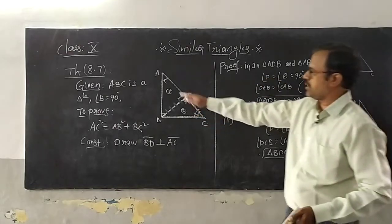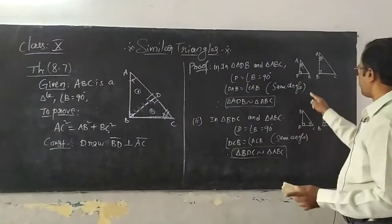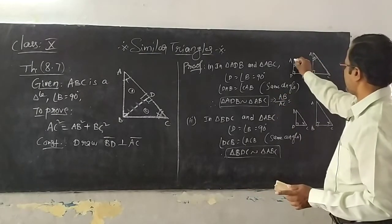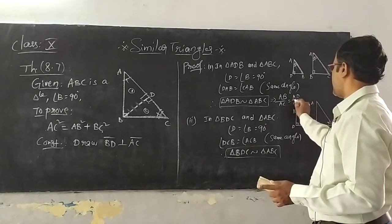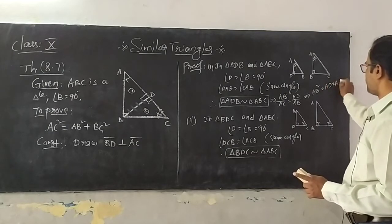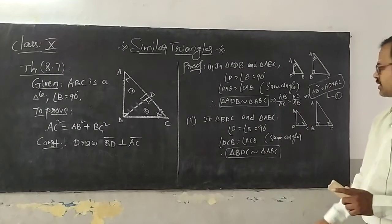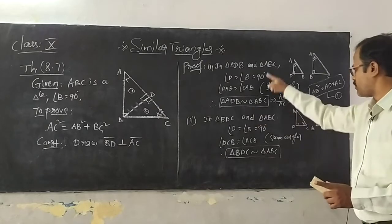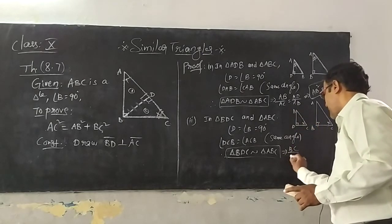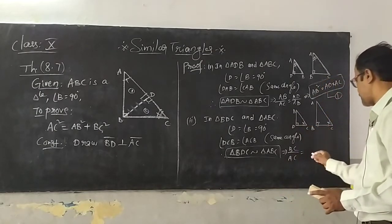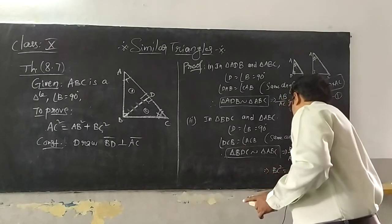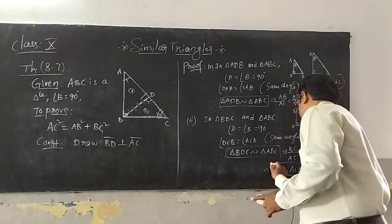Since triangle ADB is similar to triangle ABC, observe the sides carefully: AB/AC = AD/AB. By cross multiplication, AB² = AD × AC. This is equation 1. Similarly, for triangle BDC similar to triangle ABC: BC/AC = CD/BC. By cross multiplication, BC² = AC × CD. This is equation 2.